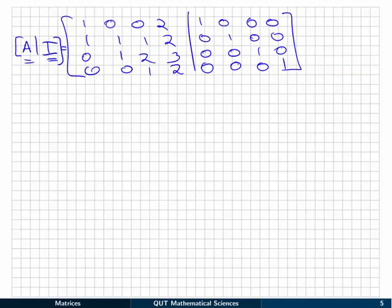Alright, so I've copied that down onto the next page. A augmented with the identity. The first step was to get a one in the diagonal. Already there, so we can move to the next step, which is to get zeros beneath it. Now you can see there's already some zeros in the second row and the third row. So we don't have to worry about those. We just need to—sorry—in the third and the fourth row, we need to get a zero here using a multiple of this row.